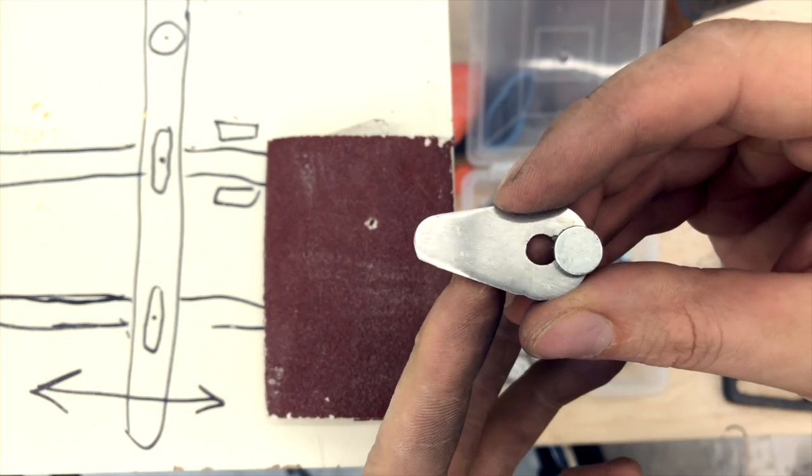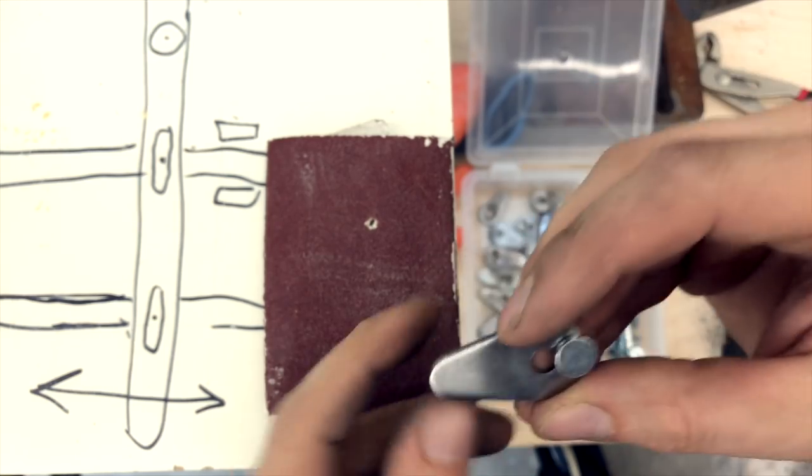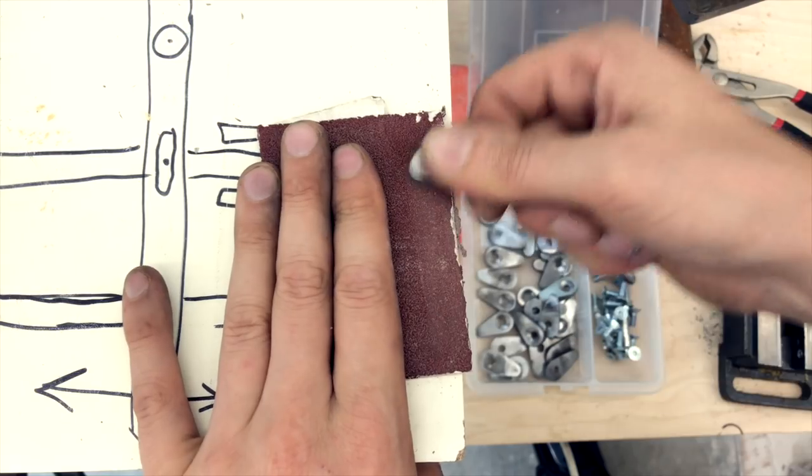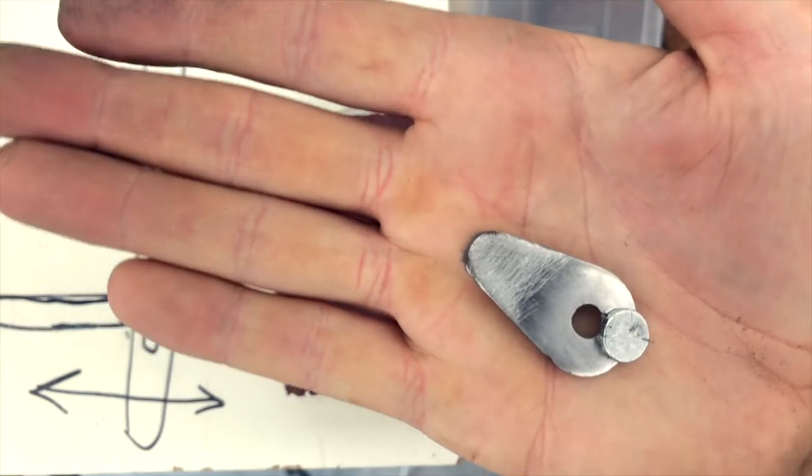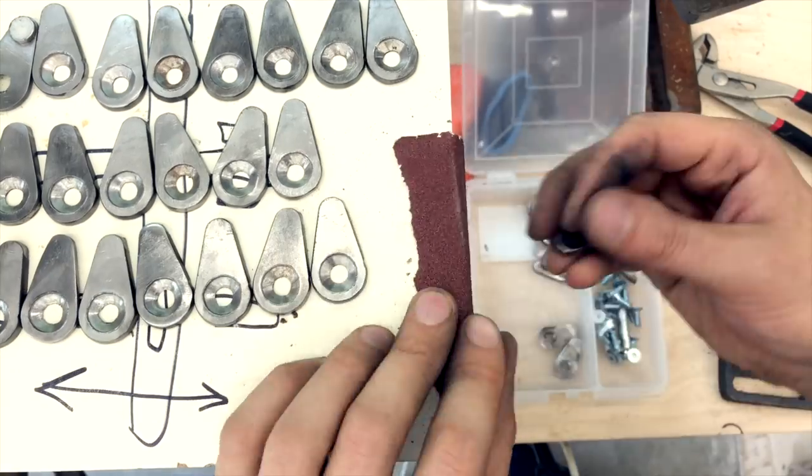After that, I roughened up the glue surfaces of both the levers and the magnets. This is to ensure that the glue has something to grab onto on the otherwise quite smooth surfaces.